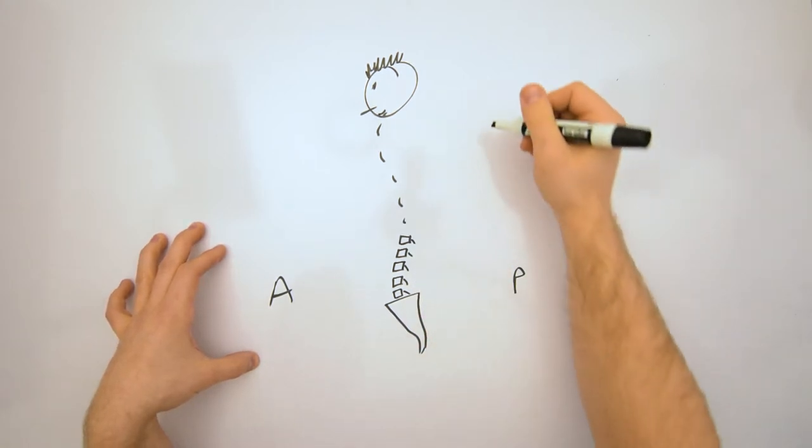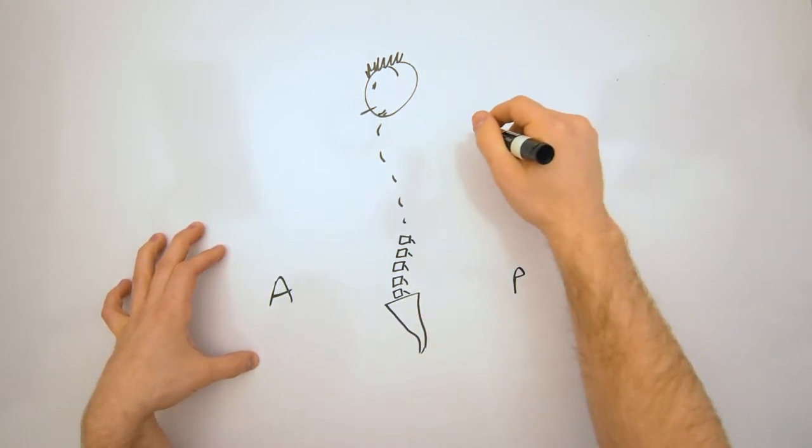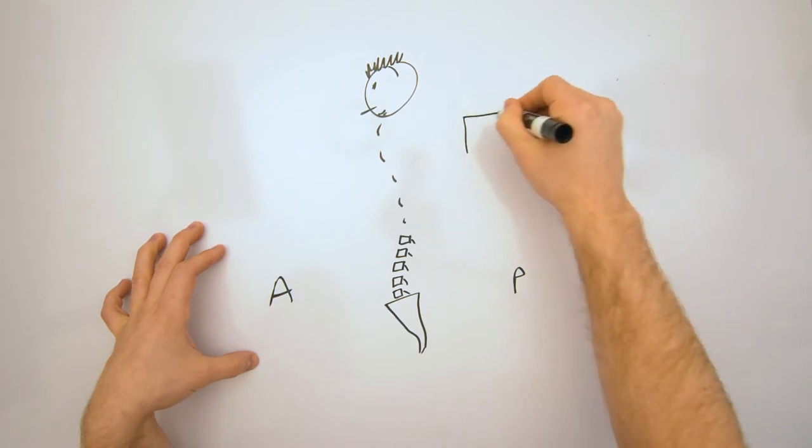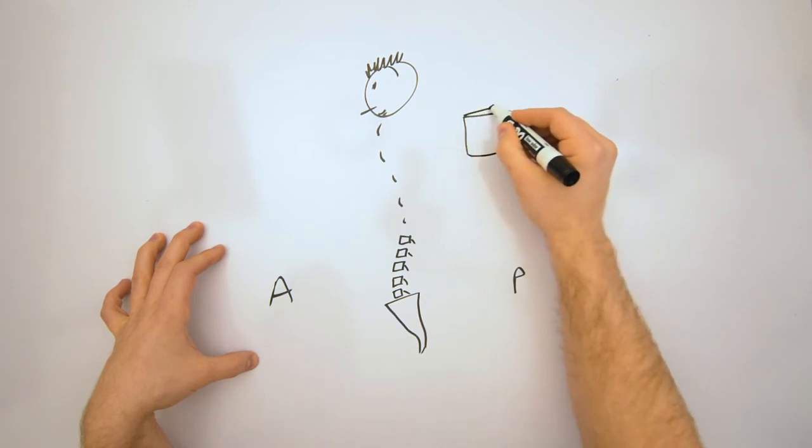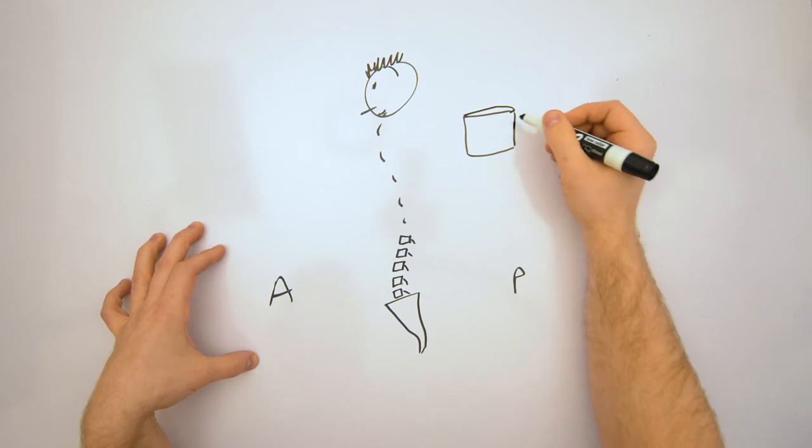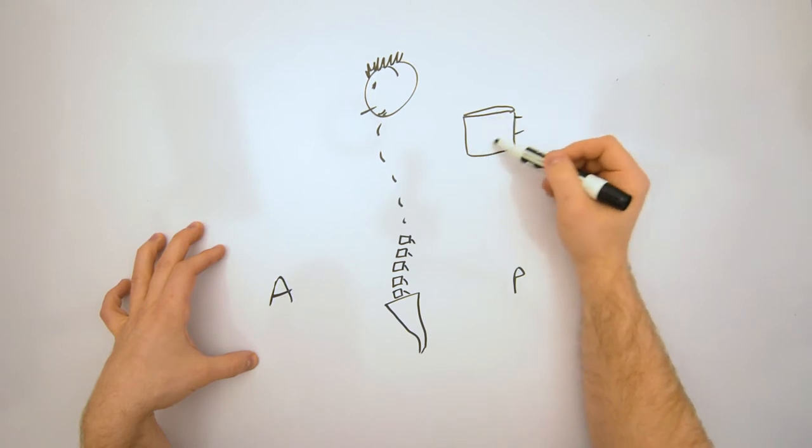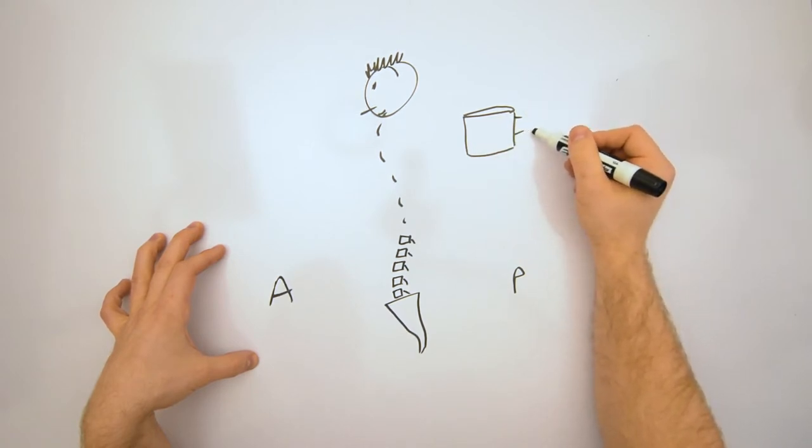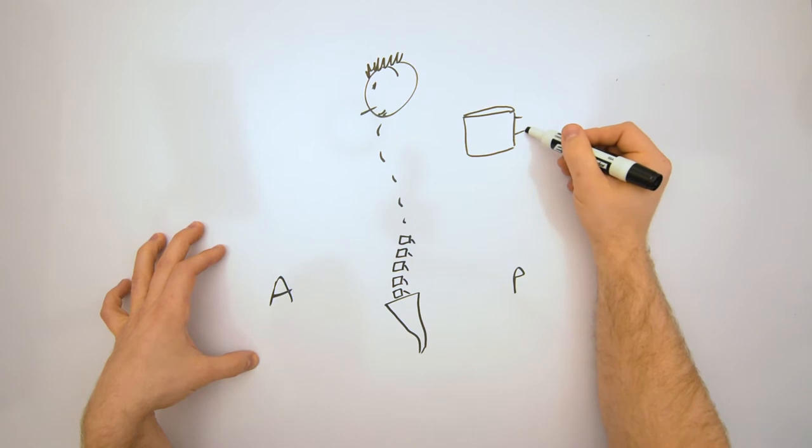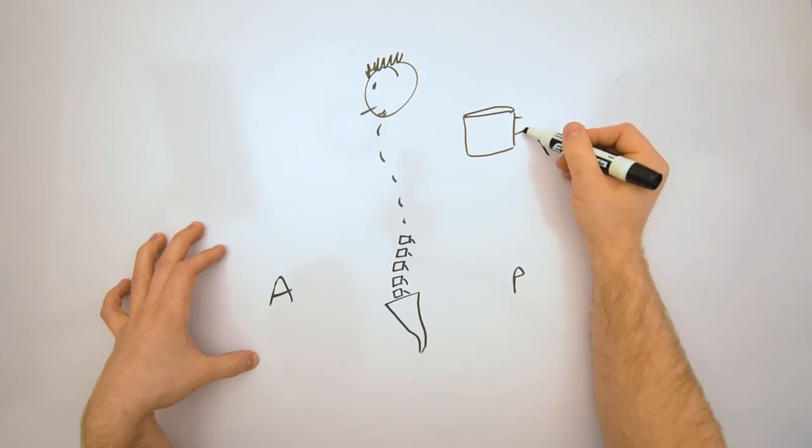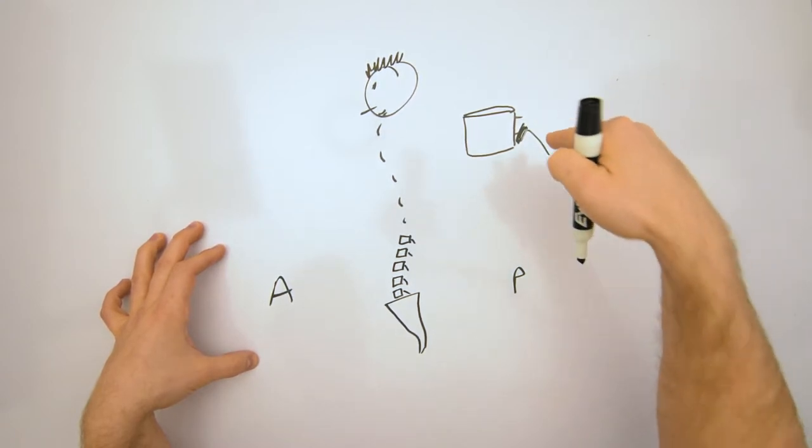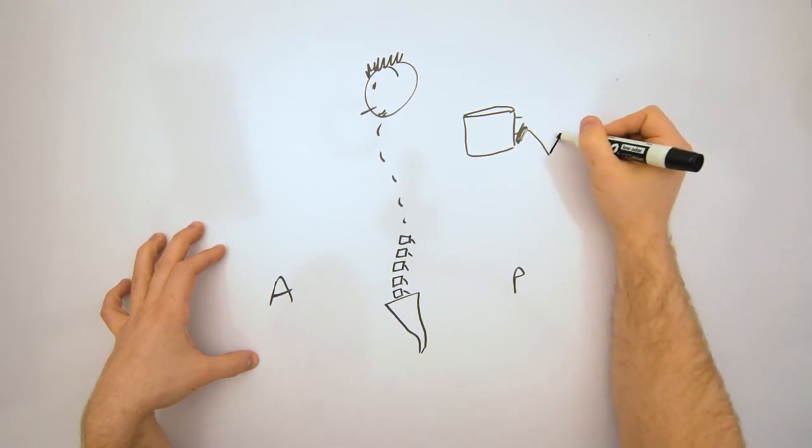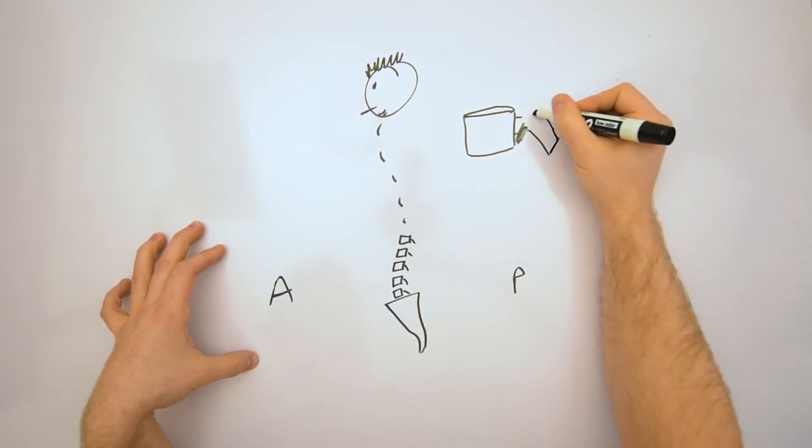So there are two terms you might run into here. There's spondylolysis and spondylolisthesis. If I have the body of my vertebra here, there are wings that kind of attach the body of it to the rest of it, which we would call the arch of it. There is a little piece that kind of comes out forward at us and out into the whiteboard here as well.